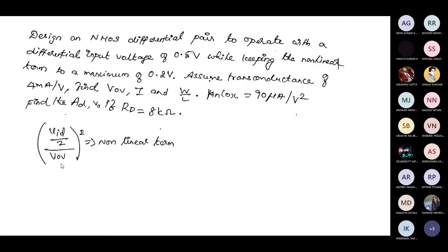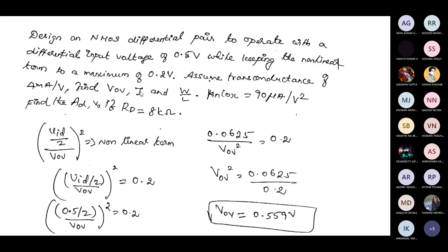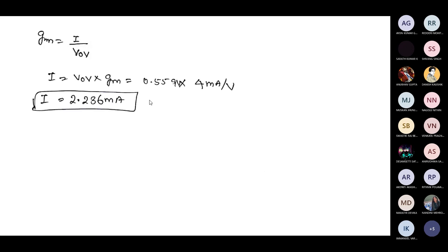The overdrive voltage is calculated as 0.559 volts. Next, the bias current is found using the relation GM equals I divided by overdrive voltage. With GM equal to 4 milliamps per volt and overdrive of 0.559 volts, the bias current I is approximately 2.2 milliamps.